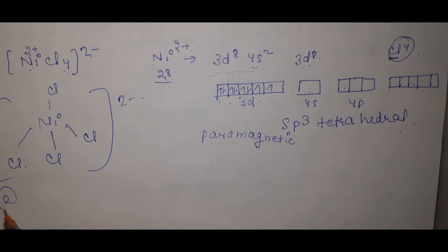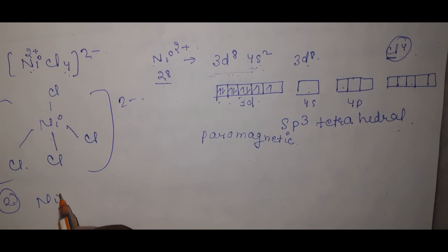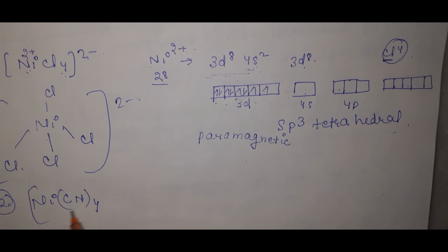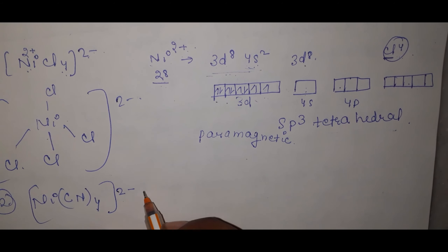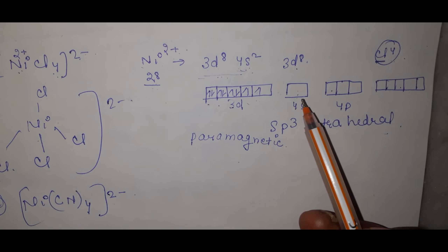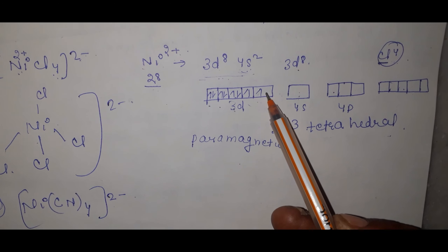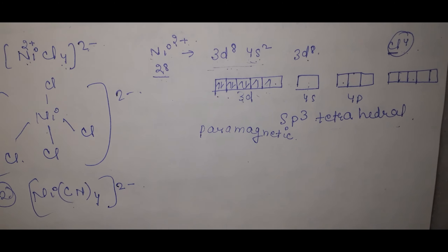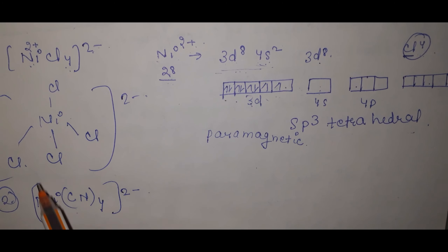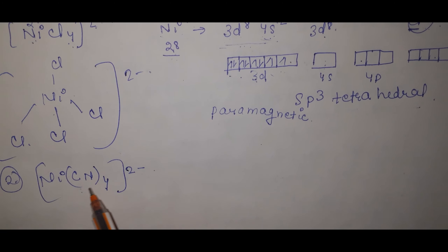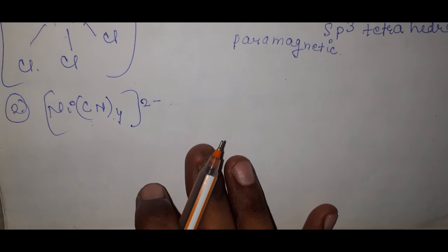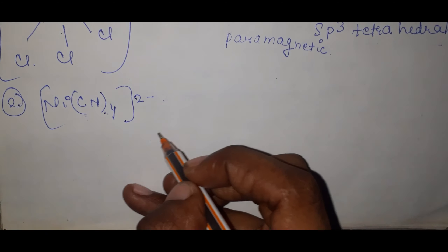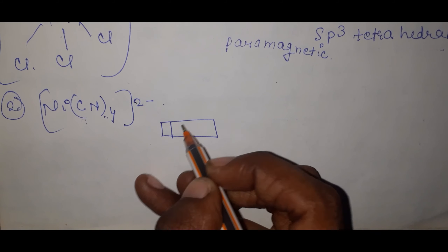Example 2: [Ni(CN)₄]²⁻. Ni²⁺ again has 3d⁸ configuration. CN⁻ is a strong ligand, so it causes pairing — the two unpaired 3d electrons pair up, and 3d becomes fully occupied in those orbitals, leaving one 3d orbital vacant for dsp² hybridization.